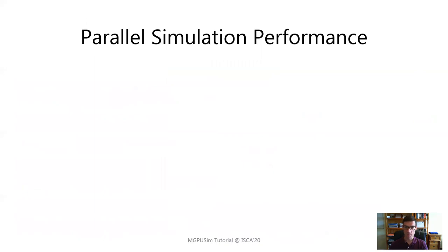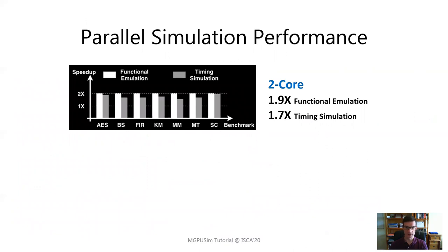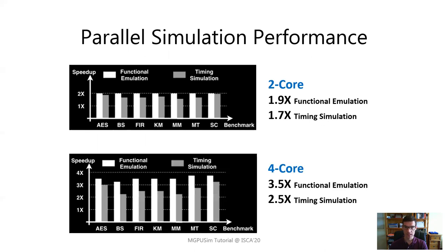NGPU-SIM comes with built-in support for multi-threaded execution to enable fast parallelized simulation without any loss in accuracy compared to serial simulation. Activating multi-threaded simulation for full benchmarks achieves almost 2x average speedup for both functional emulation and detailed timing simulation on a two-core CPU. On a four-core CPU, speedups reach up to 3.5x, demonstrating that we can take full advantage of NGPU-SIM's multi-threaded capability for faster simulations.